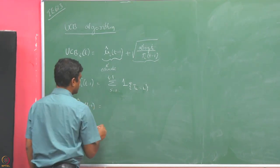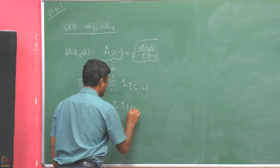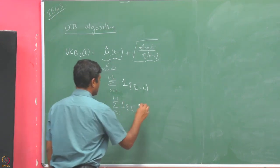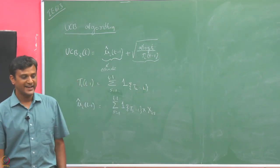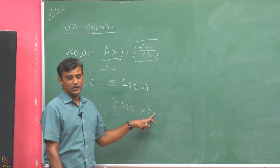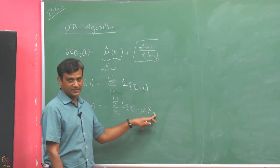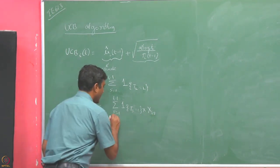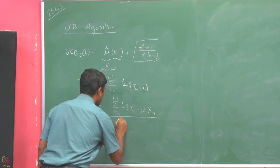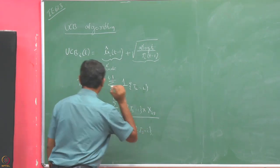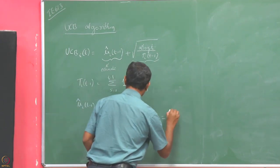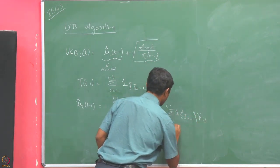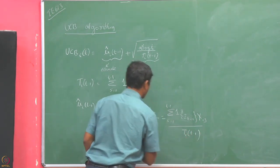The estimate mu-hat_i(t-1) is the summation over s = 1 to t-1 of x_i(s), where x_i(s) is the sample observed from arm i if it was pulled in round s. It is not necessary that arm i is pulled in every round — the indicator handles that — and the whole sum is divided by t_i(t-1).